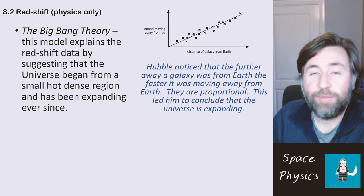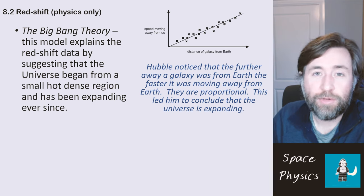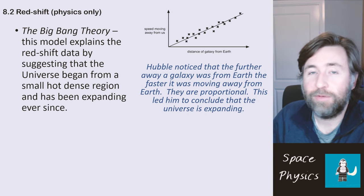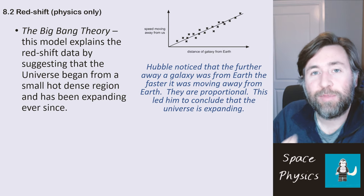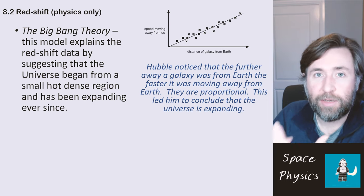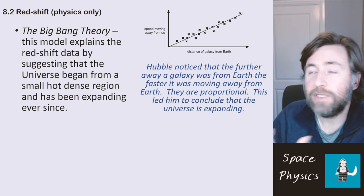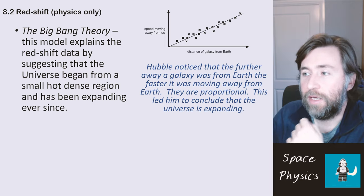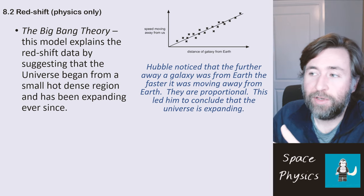And that is some evidence for the big bang theory. This is a model that explains this red shift data. Remember how models explain the evidence that we have. And if we don't have good enough evidence, then we change our model. Or if we have evidence that contradicts a model, we change that model.